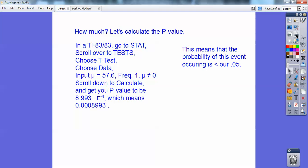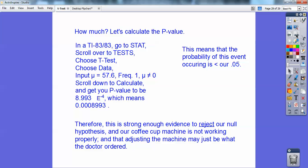That is significantly less than our 0.05 cutoff. That is strong enough evidence to reject our null hypothesis, and our coffee cup machine is not working properly, and adjusting the machine may be just what the doctor ordered. Try to answer it in the context of the problem. Good work, you guys.